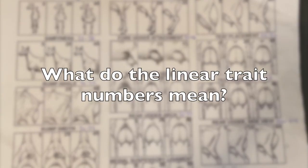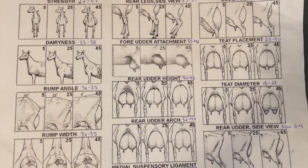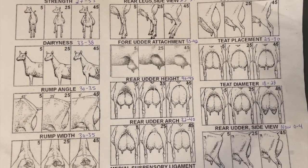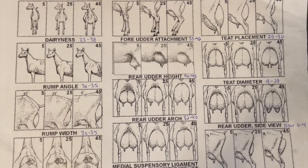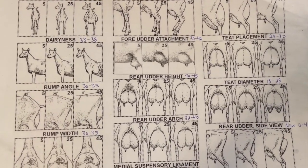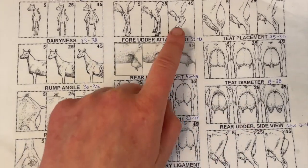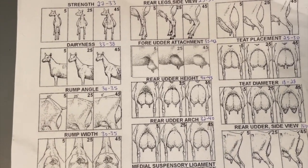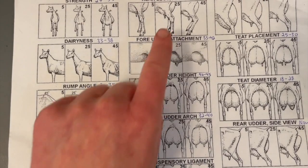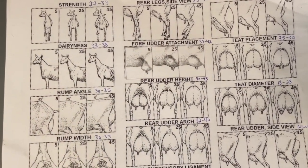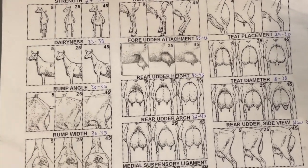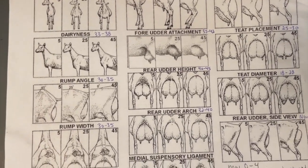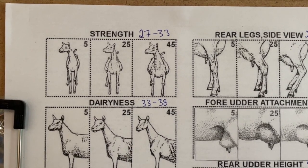Let's break down what those numbers mean. The linear traits are scored on a scale of 1 to 50, but you're not necessarily shooting for the biggest number. When I first got involved with linear appraisal, I was confused — why would we be shooting for an animal or teats that look like that at the extreme? The reality is, in most categories we're shooting for right in the middle. We're looking for a well-balanced animal, not either of the extremes.